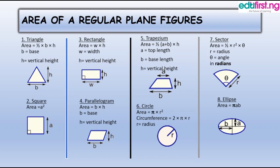H is our vertical height. Six, the area of a circle is pi r squared, and the circumference of a circle is 2 pi r, where r is the radius, which is half of the diameter. Seven, the area of a sector is half r squared times theta, where r is the radius and theta is the angle subtended by the arc in radians. Eight, the area of an ellipse is pi a b.